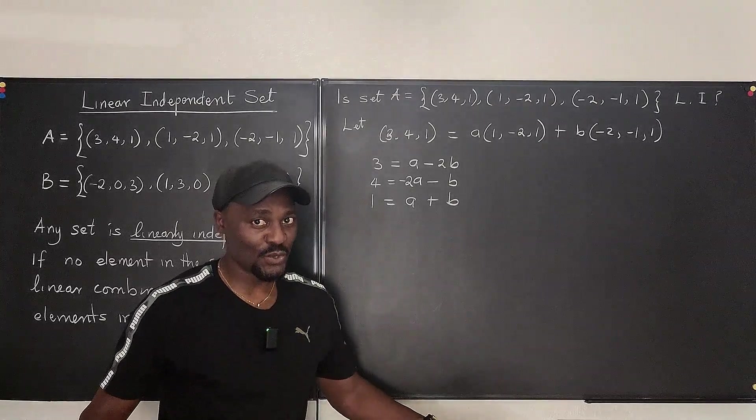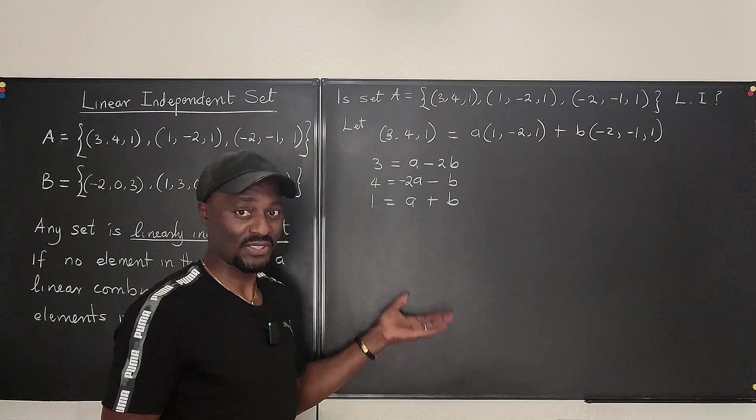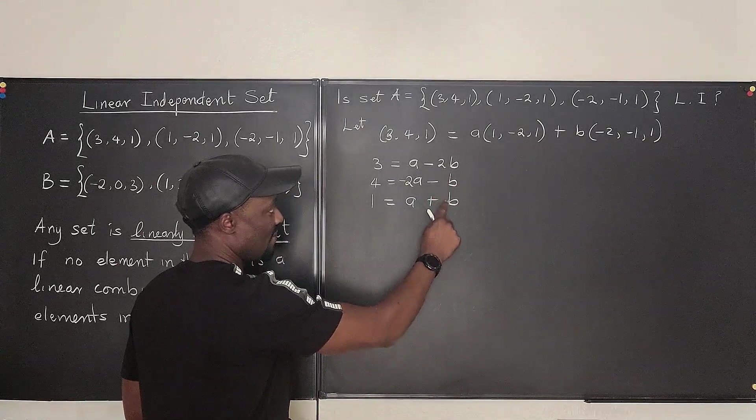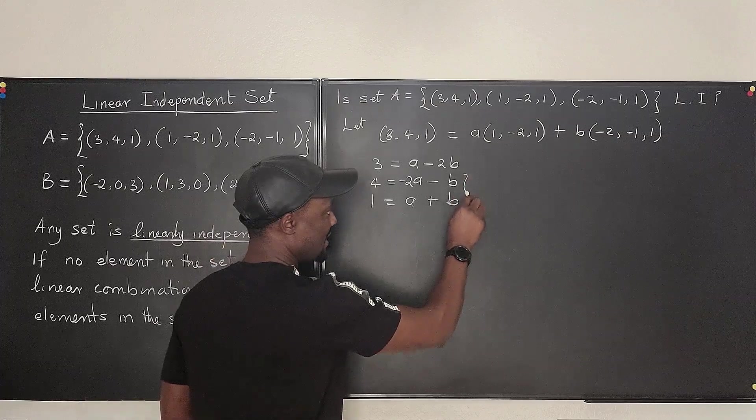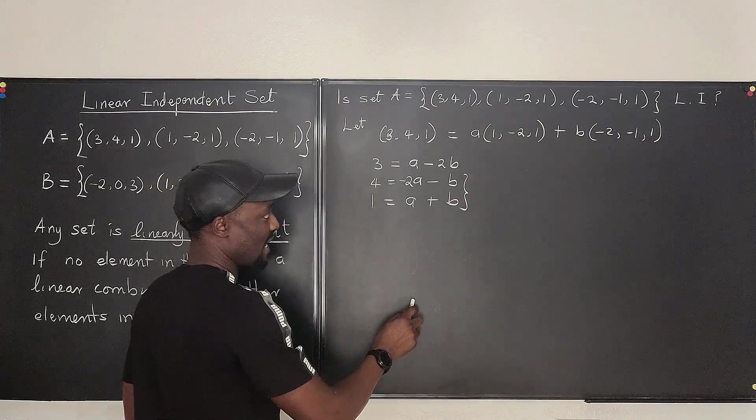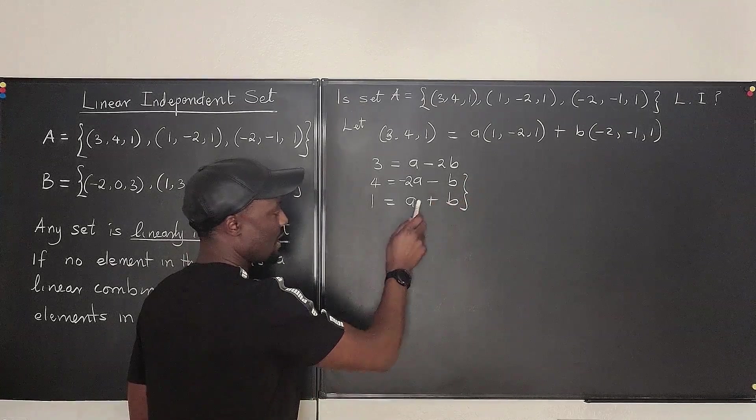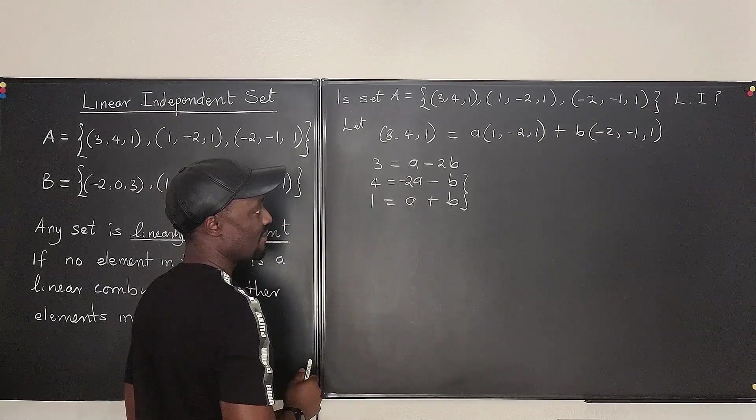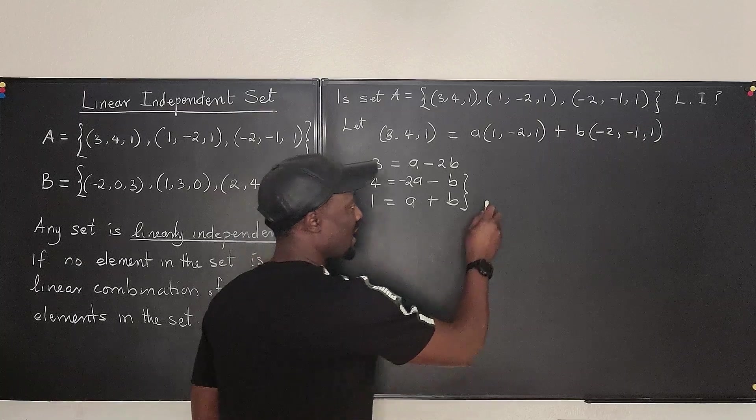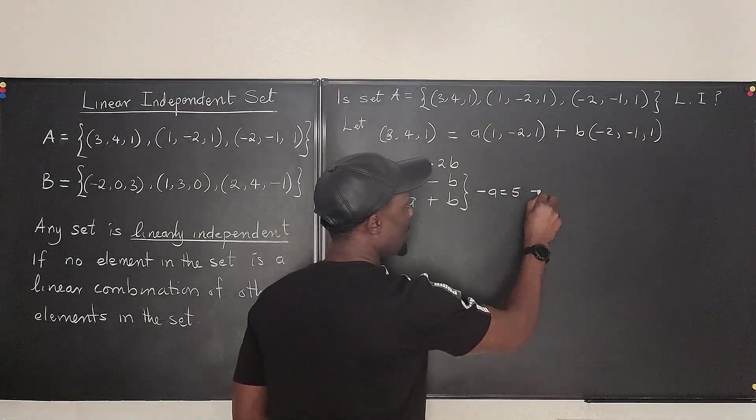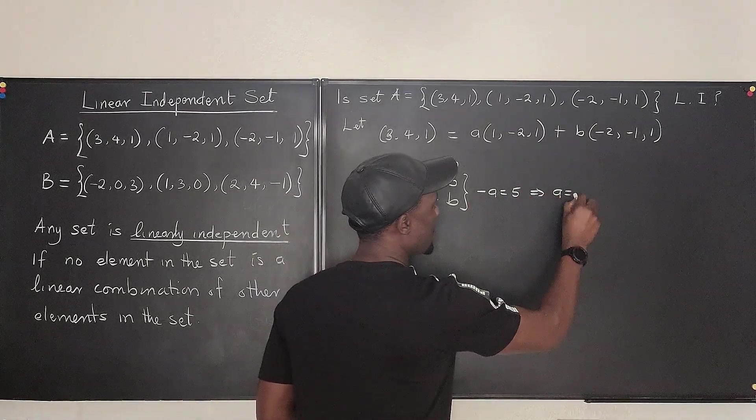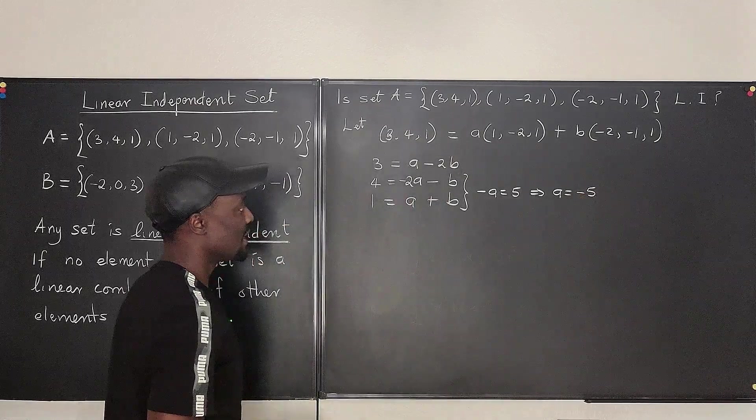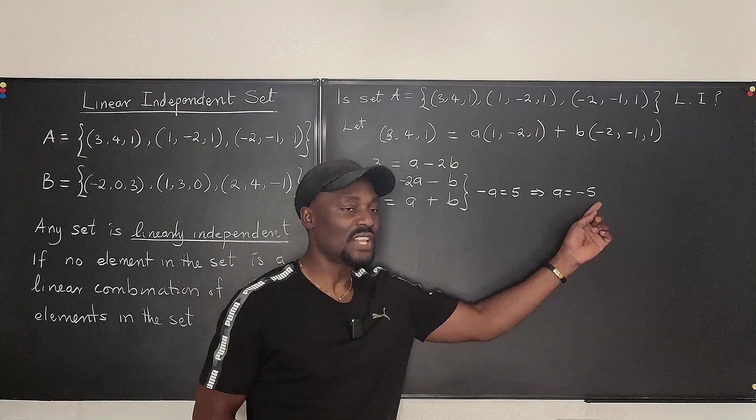Now, quickly, you can do your quick math. There's nothing complicated. It's always a system of linear equations. I know I can eliminate B from here if I add these two equations together. So if I add these two together, what do I get? This B will be gone. If I add this to this, I'm going to get minus A. If I add this to this, I'm going to get 5. So I can say minus A is equal to 5, which implies that A is equal to negative 5. Nice.